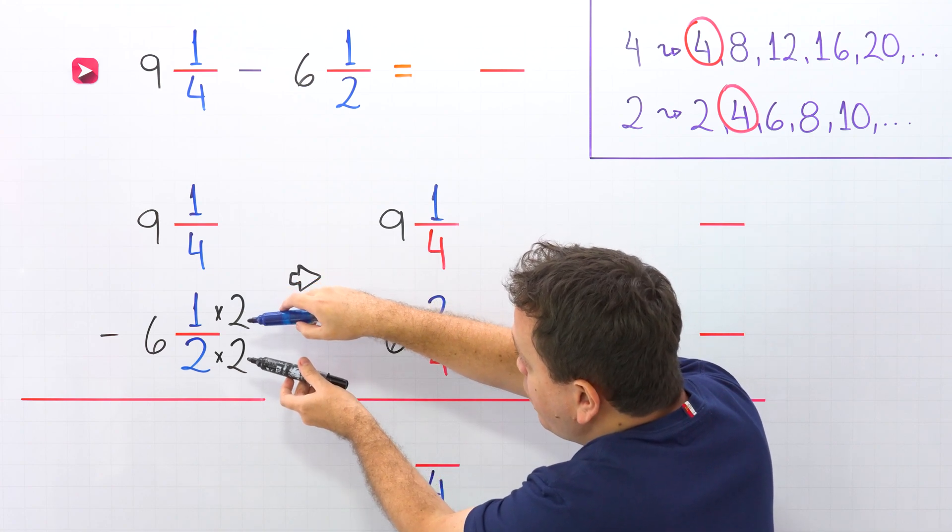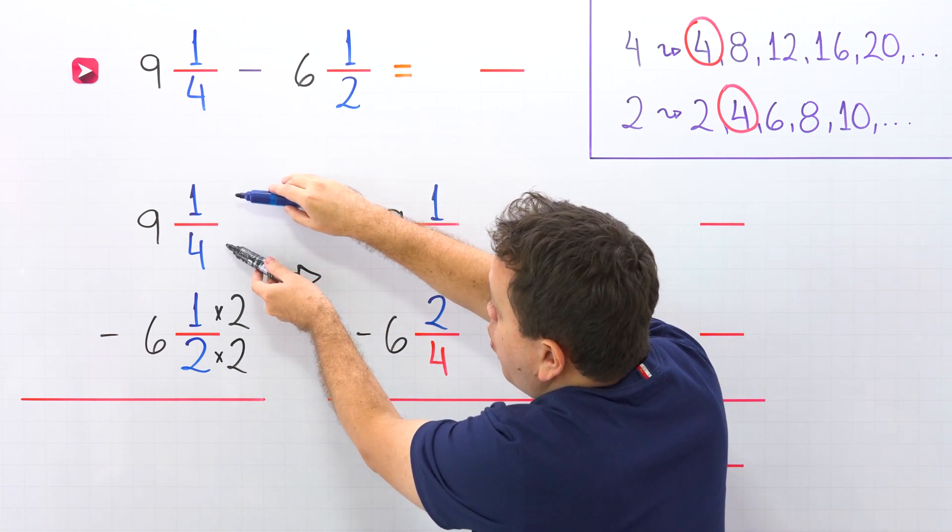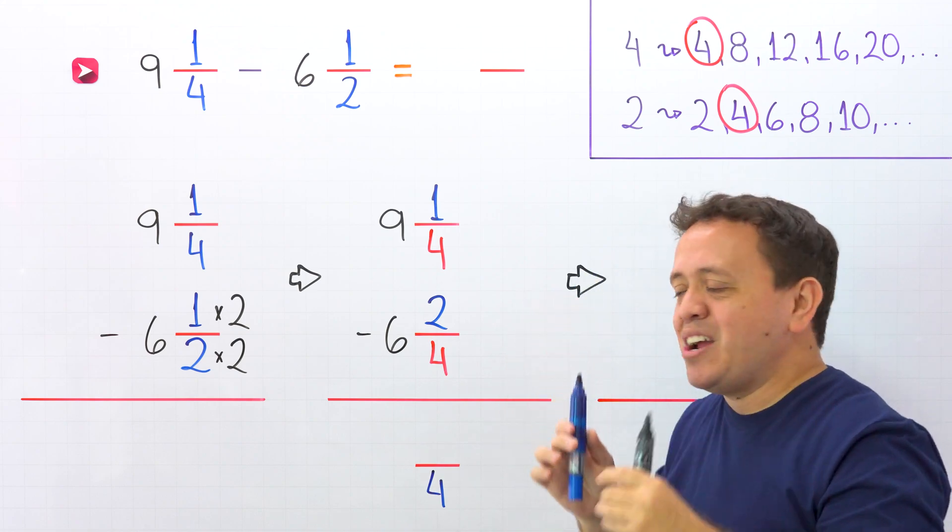The second fraction, 1 half, is greater than the first one, 1 fourth. So, what are we gonna do? We need to regroup.